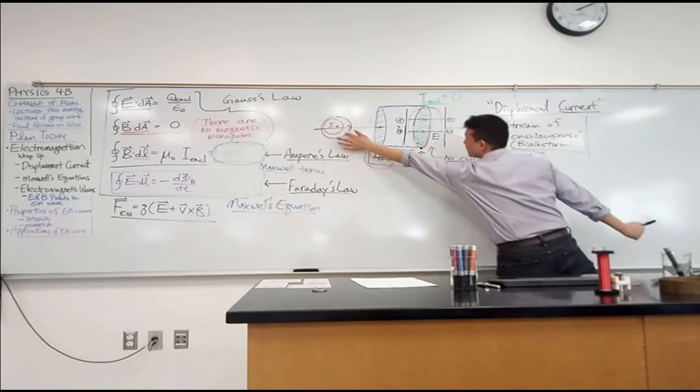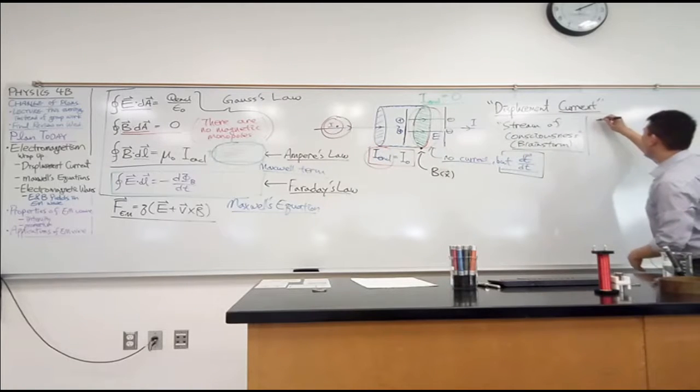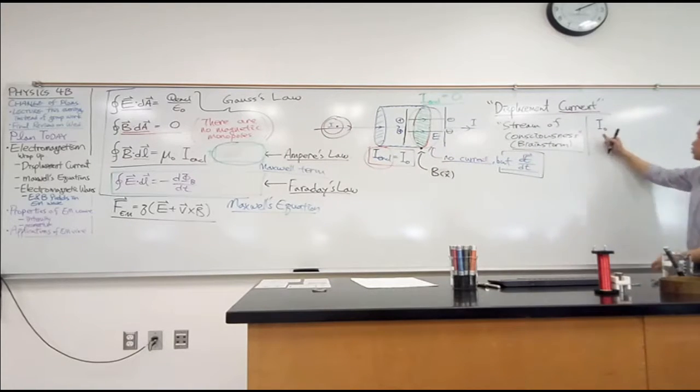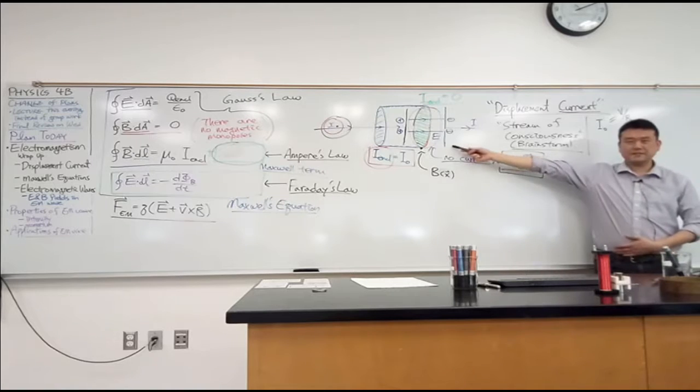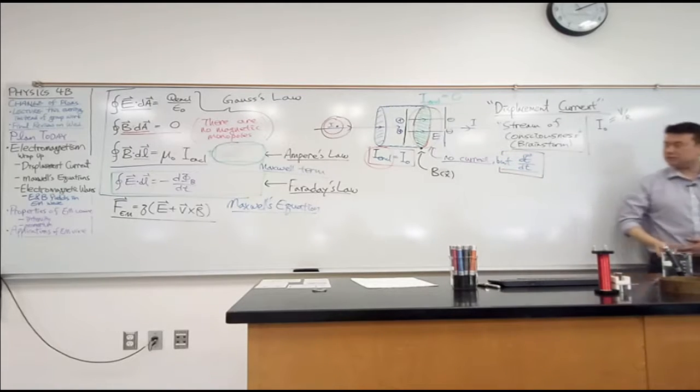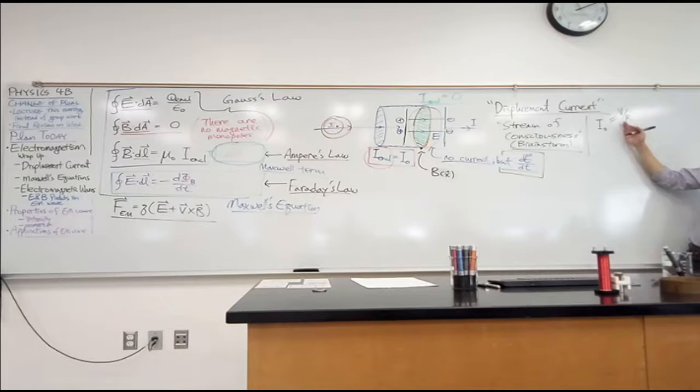So I have current I naught coming in. What is this current? What else is this current related to that I can write down some equations for? Chris? Okay. Current is related to V over R. Now, in this setup, is there any resistor anywhere? Yeah, there is no resistor. So this relationship is there. I might write it down as I'm brainstorming, but it probably won't get me to where I want.